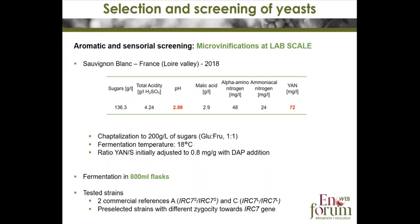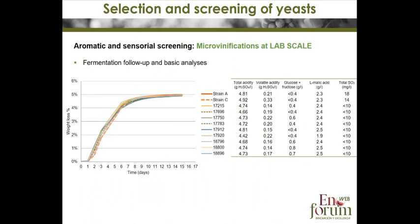Chaptalization and nitrogen adjustment were made. Fermentations were done at 18°C by inoculating 800 mL of must with every yeast strain — both commercial strains and preselected strains with different zygosity towards the IRC7 gene. From the first graph, it can be seen that there are no differences in lag phase and fermentation capacity between the different strains.